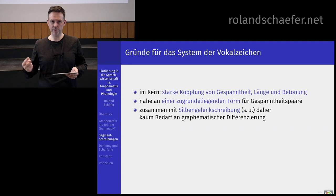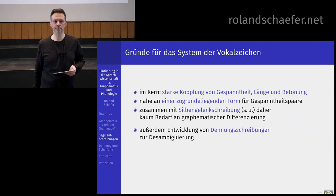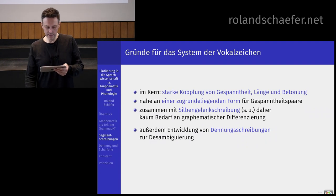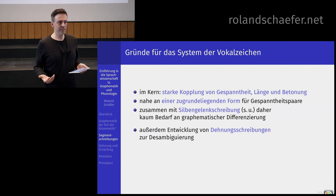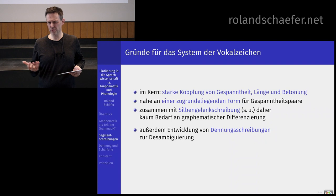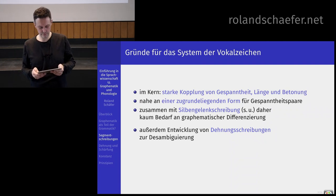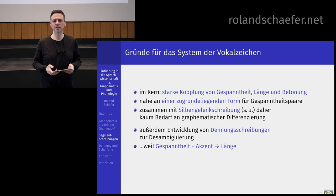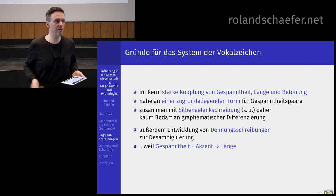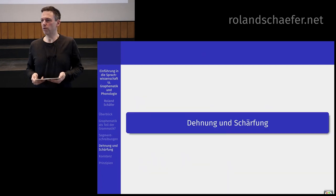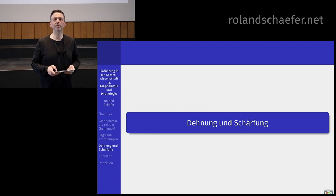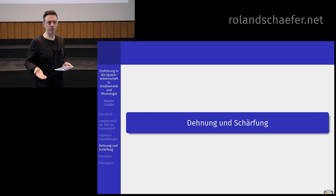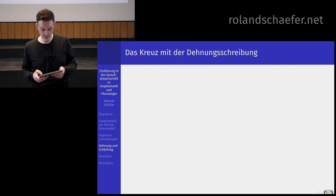Das Kreuz mit der Dehnungsschreibung: wir haben das Dehnungs-H in Reh, Pfahl oder eben auch den Dehnungsdoppelvokal, deutlich seltener, in Saat und Boot. Kann man das vorhersagen? Also kann man schon teilweise. Würden Sie Boot mit OH schreiben? Vielleicht nicht. Speziell beim I: wenn das I gespannt und lang ist, haben wir fast immer das Dehnungs-E, wie in Knie, Dieb. Das Dehnungs-E entspricht auch nicht dem phonologischen Schreibprinzip. Das ist in vielen Fällen weitgehend redundant.